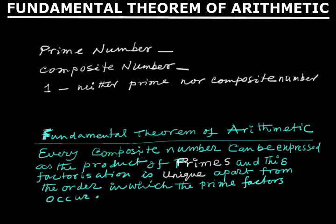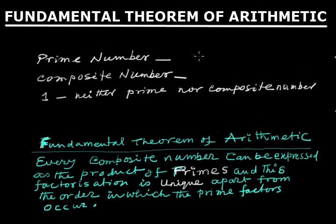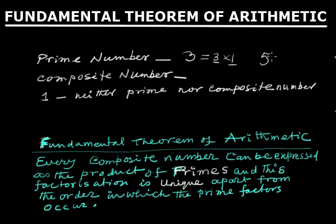Before we start the theorem, let's first discuss which numbers are prime numbers. Prime numbers are those whose only factors are the number itself and 1. For example, 3 is a prime number — 3 can be written as 3 × 1, so it is divisible by 3 and by 1. Similarly, 5 can be written as 5 × 1. Note that 1 is neither prime nor composite.